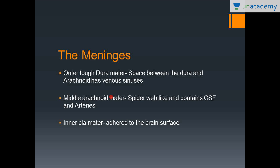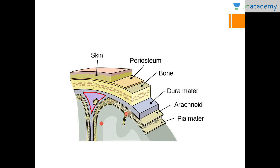There are three spaces between the meninges. The first, between the dura mater and the arachnoid mater, is the subdural space, which contains venous sinuses that drain blood from the brain. Between the arachnoid mater and the pia mater is the subarachnoid space, which contains CSF (cerebrospinal fluid) and the arteries that supply the brain. The innermost pia mater is adherent to the brain surface with no space between them.